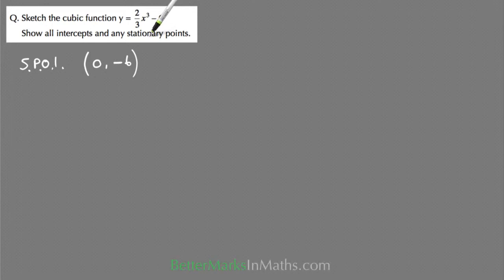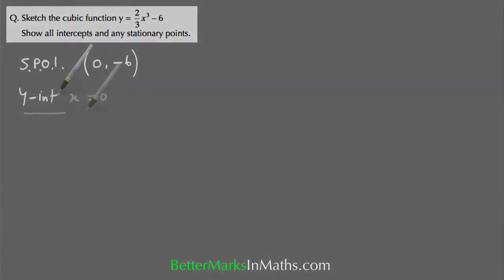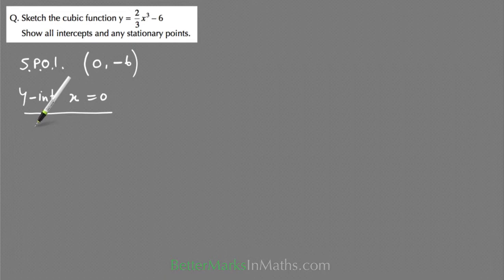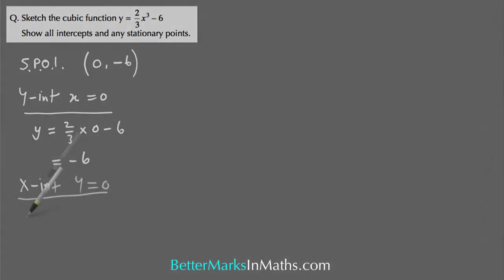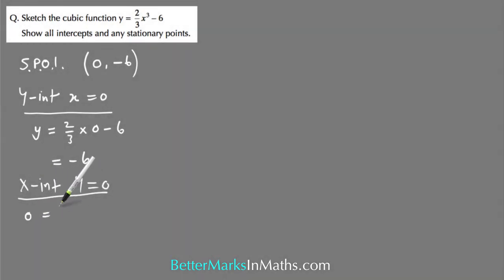Show all intercepts. Once again the y-intercept: letting x equals zero, so y equals two thirds times zero cubed which is zero and then minus six. That equals minus six, so that's the y-intercept.